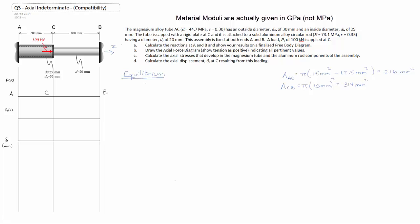We have two possible reactions, a reaction at A and a reaction at B. We have only one equation of equilibrium that we can use, which is to say the sum of the forces in the x direction equals zero. So this problem is statically indeterminate.